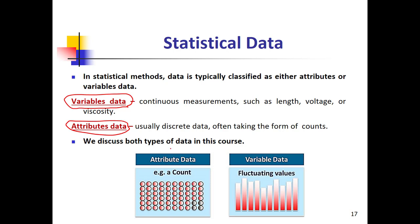Attribute data are discrete data. So variable data are continuous data — continuous measurements — while attribute data are discrete data.